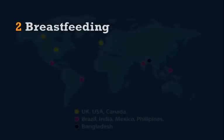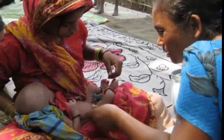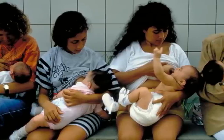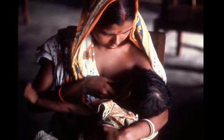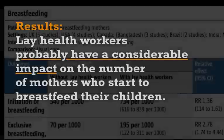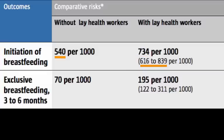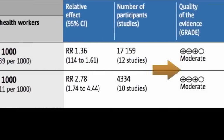The trials that focused on breastfeeding took place in nine high, middle and low income countries. In most of the trials, lay health workers visited mothers in their homes and gave them counseling, education and support about breastfeeding. These mothers were compared to mothers who were not visited by lay health workers. These trials conclude that lay health workers probably have a considerable impact on the number of mothers who start to breastfeed their children. They probably also have a major impact on the number of mothers who breastfeed exclusively for the whole first six months. We evaluated the quality of this evidence to be moderate.